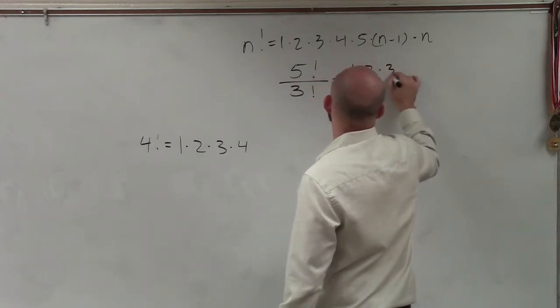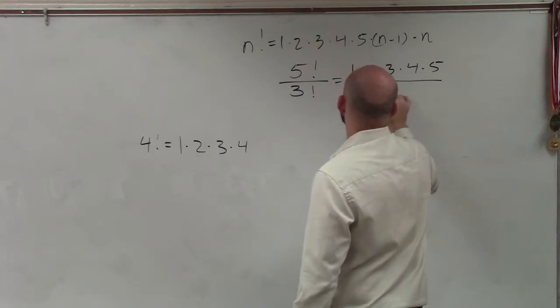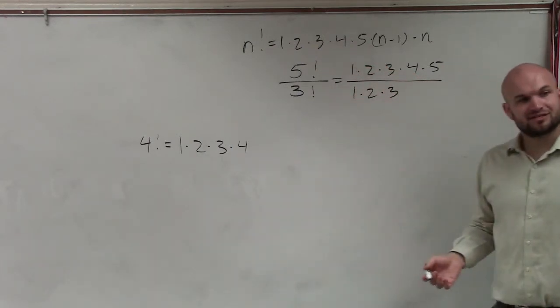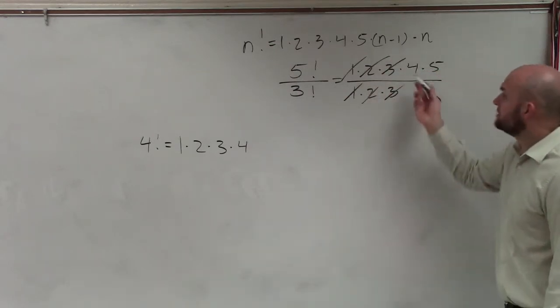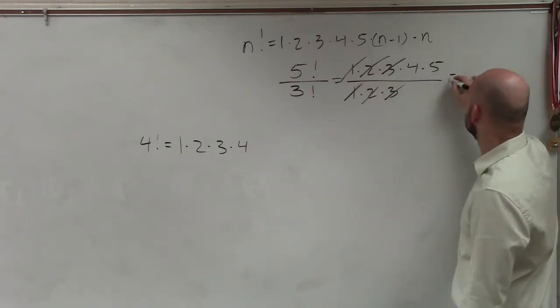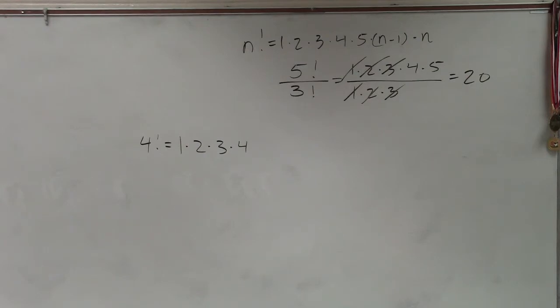This would be 1 times 2 times 3 times 4 times 5 over 1 times 2 times 3. Well, obviously, ladies and gentlemen, you guys can see those divide to 1. We're only left with 4 times 5, which equals 20. Boom. That's all you're expected to do.